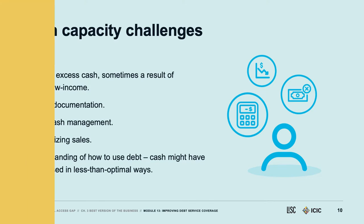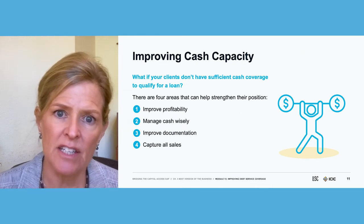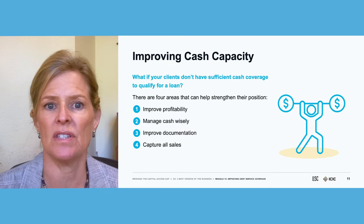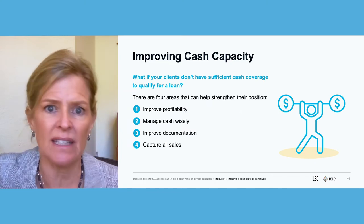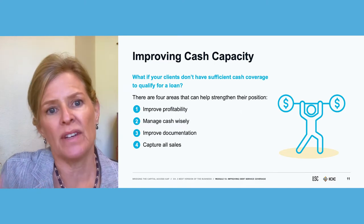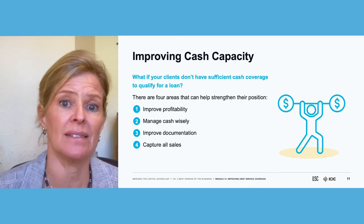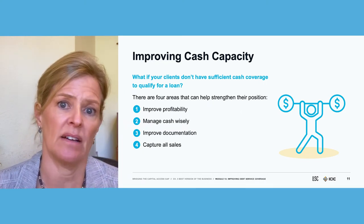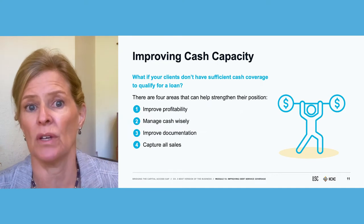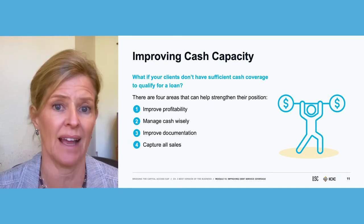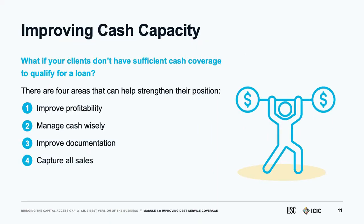Once you've looked at your client's documentation, done an initial analysis on debt service coverage, and identified issues, there are generally four categories of problems and corresponding strategies: improve profitability, implement better cash management strategies, improve documentation, and capture all sales so you can prove to a lender that cash is available.